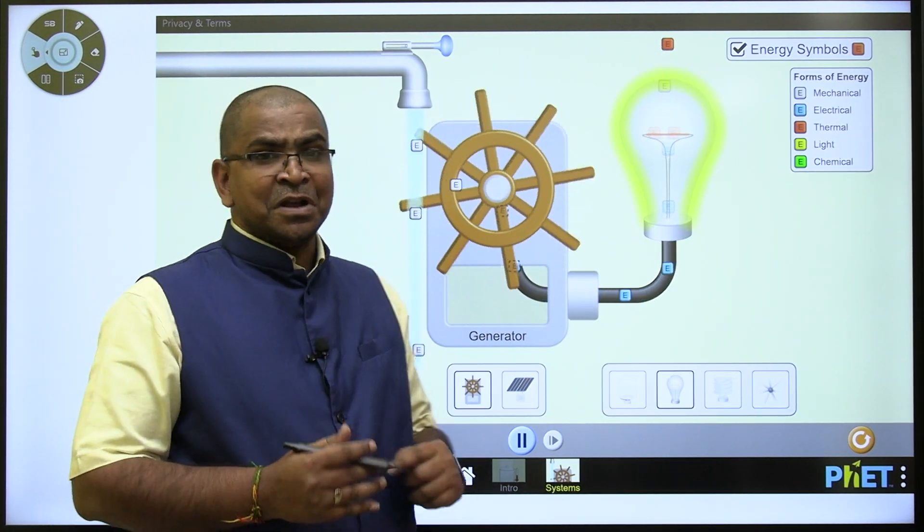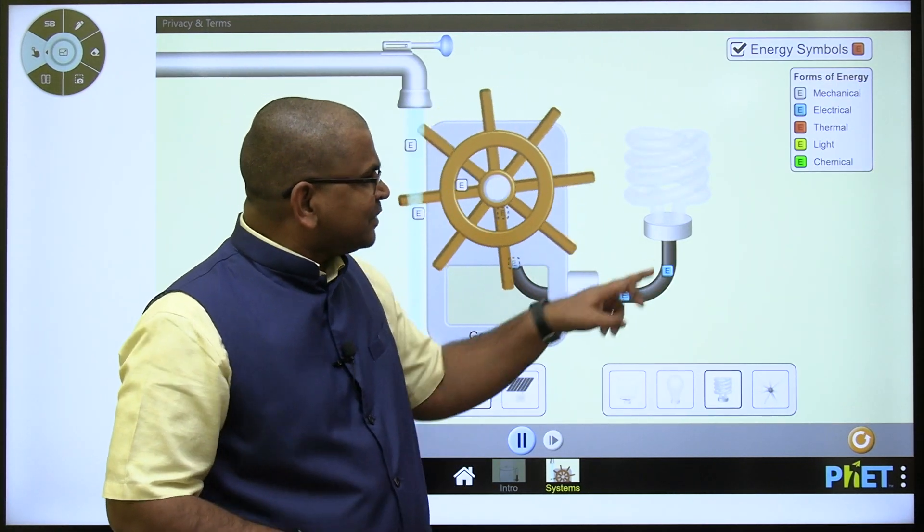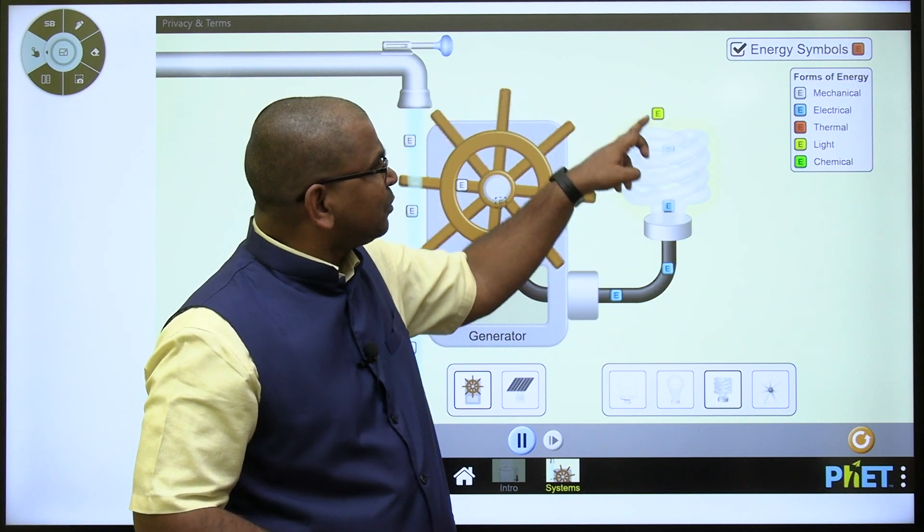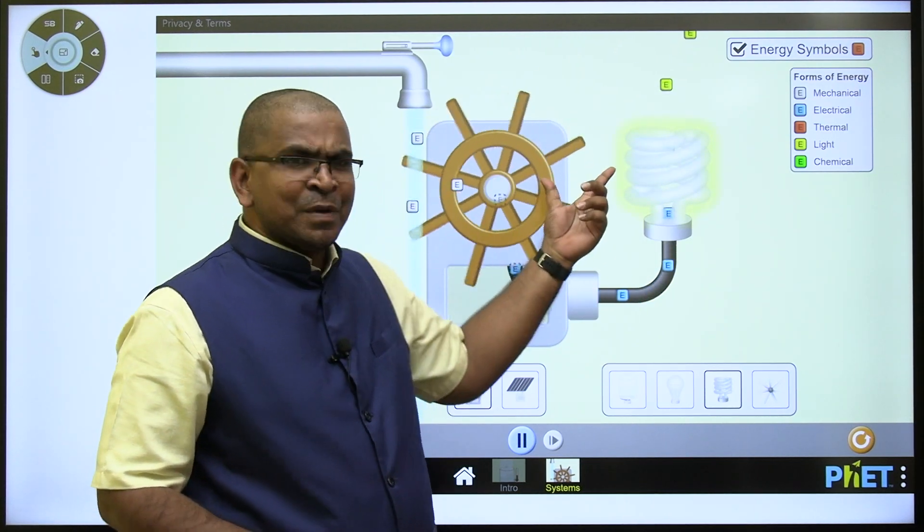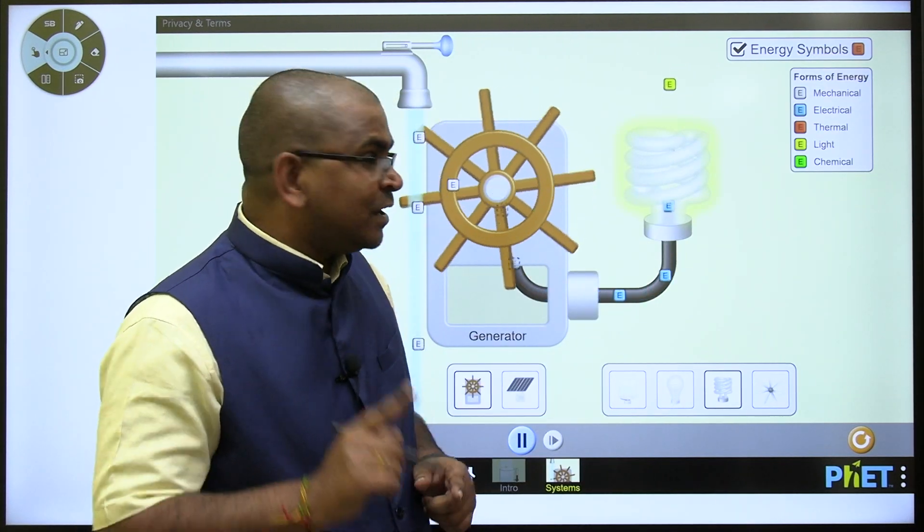And to avoid that loss, heat loss, I can choose CFL. Now observe the CFL. CFL will convert electrical energy into light energy. There is no much loss in heat. That is why CFL bulbs are advantageous than normal red bulbs.